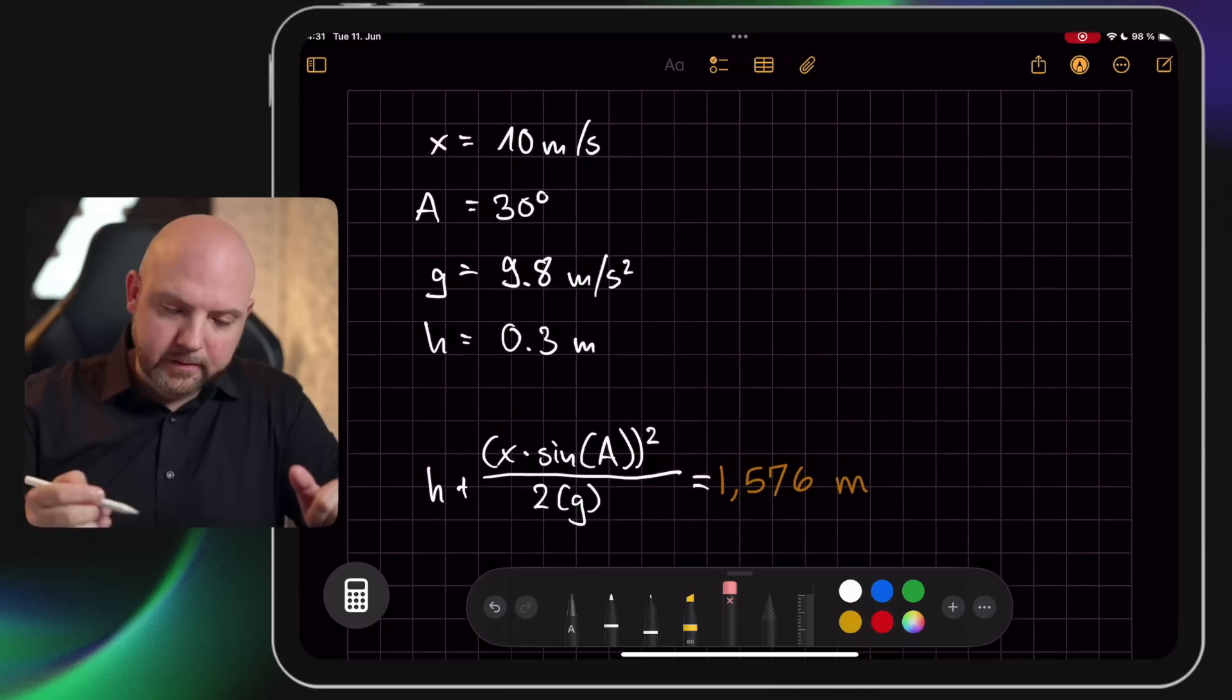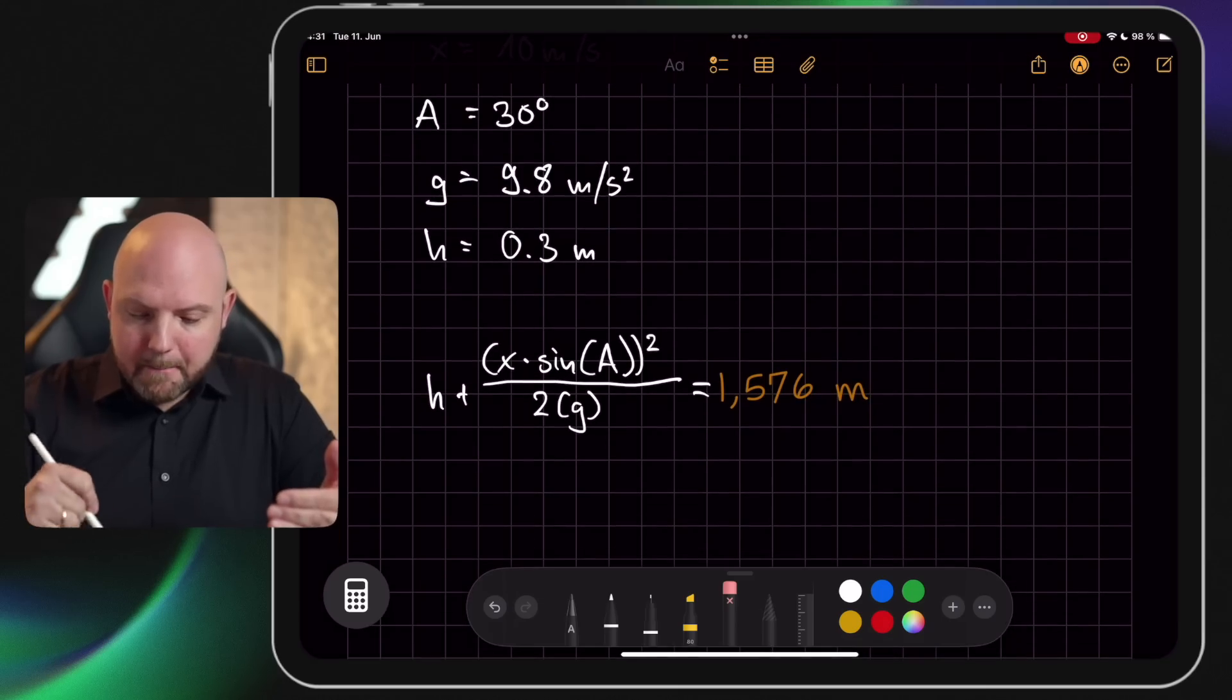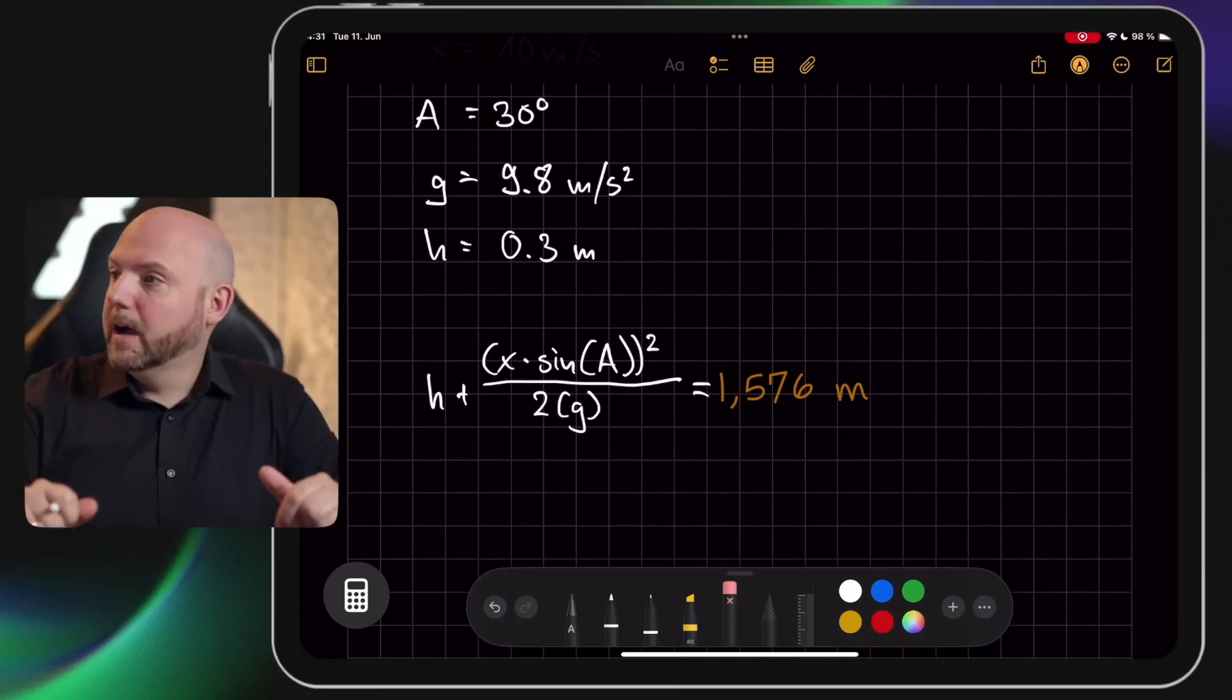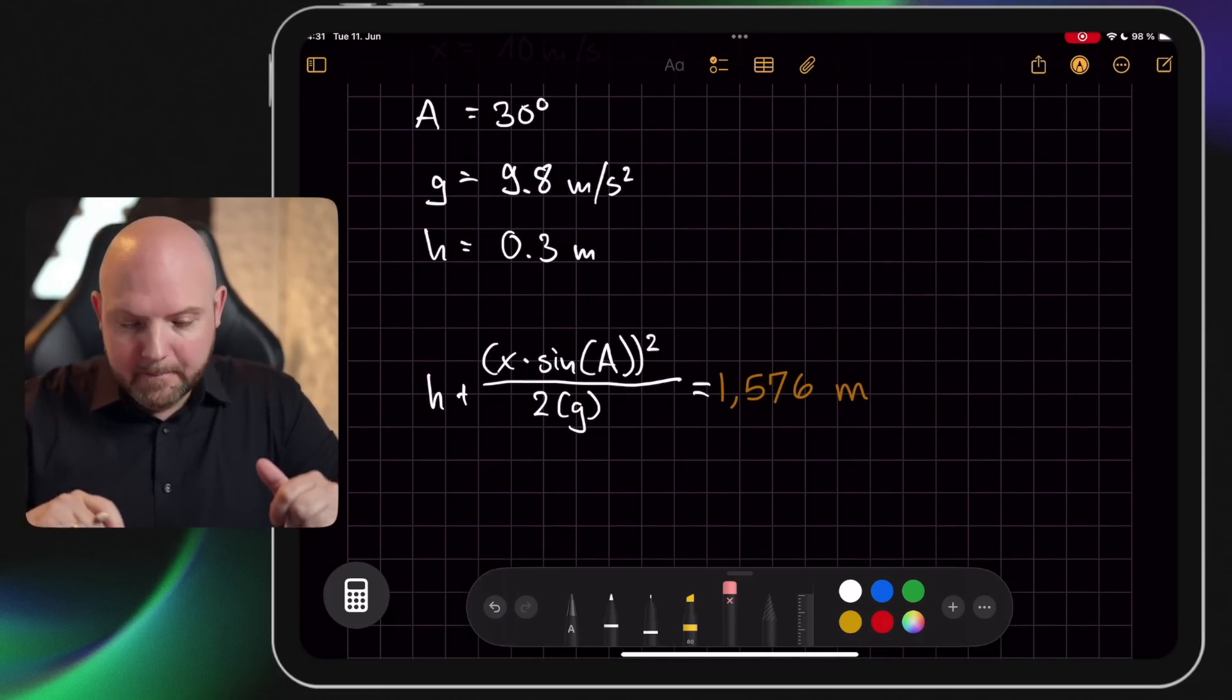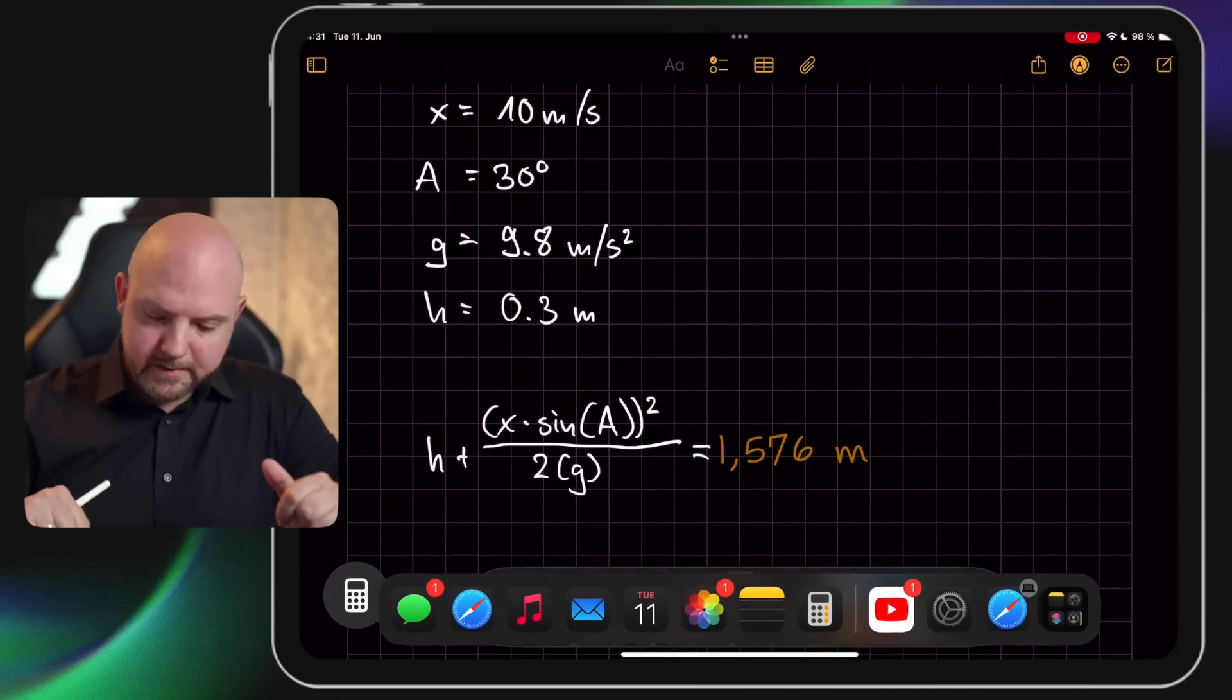What I really think is awesome is that it recognizes now the meter per second and then also puts out the meters in the end as this is now our height, right, the Y. So this is really amazing. So let's go now to Apple Notes and try the same.